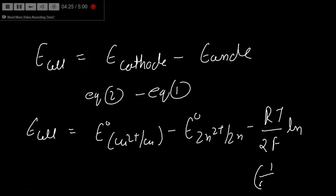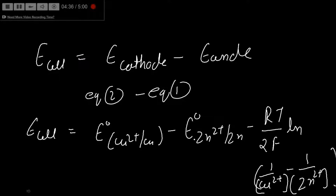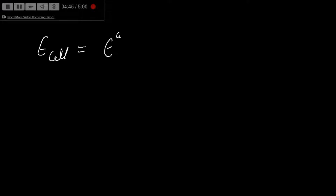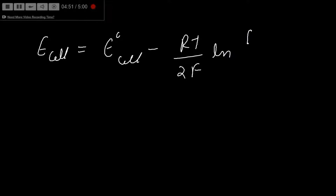Solving this, I get: E_cell = E°_cell minus (RT / 2F) times ln([Zn²⁺] / [Cu²⁺]). So the Nernst equation for the full cell relates the actual cell potential to the standard cell potential and the ratio of ion concentrations.